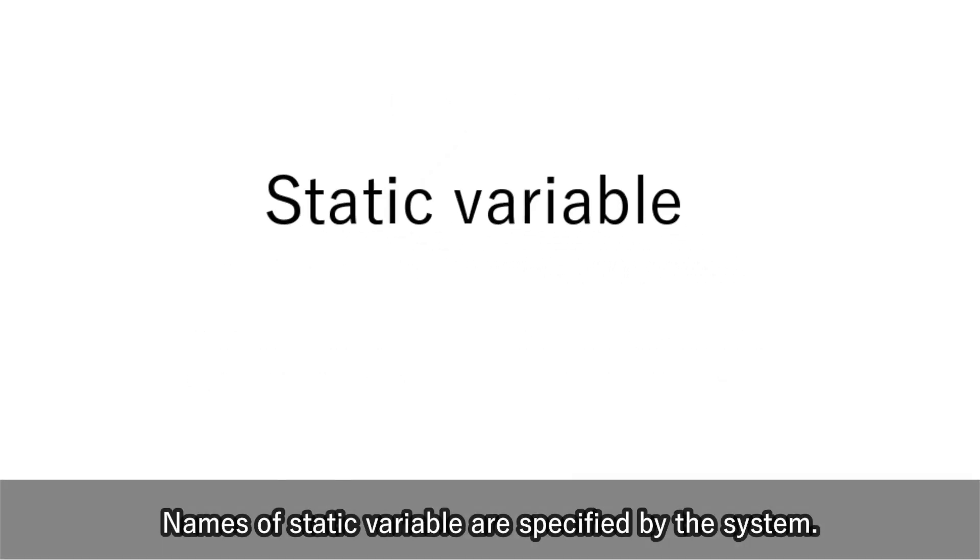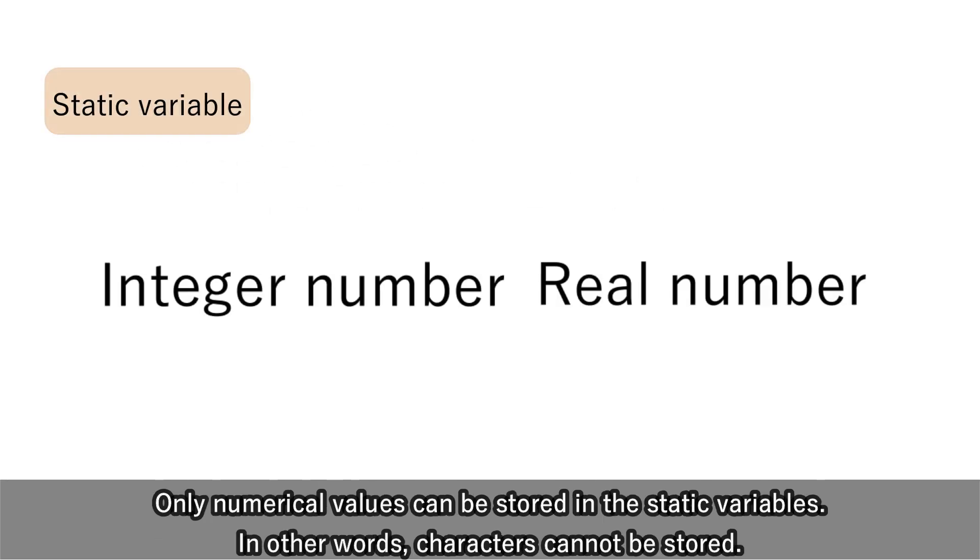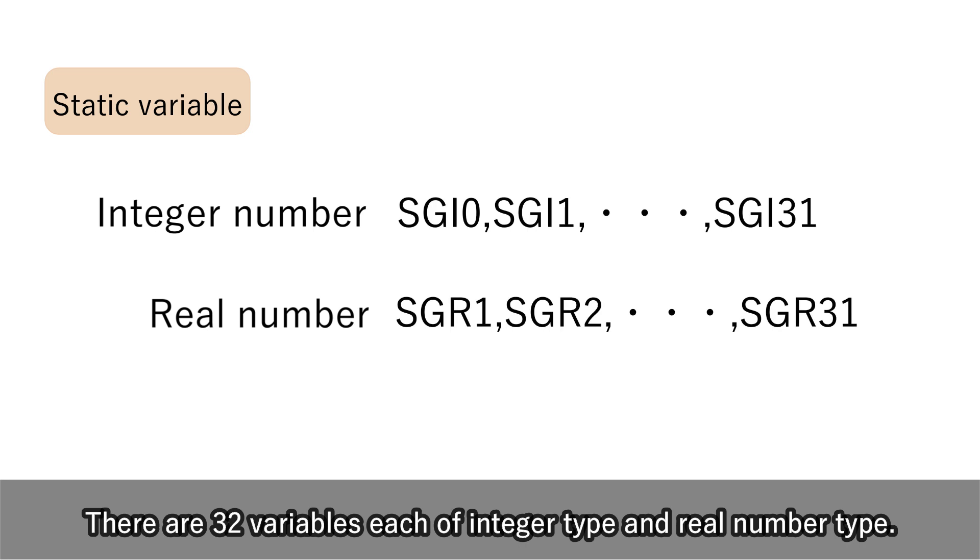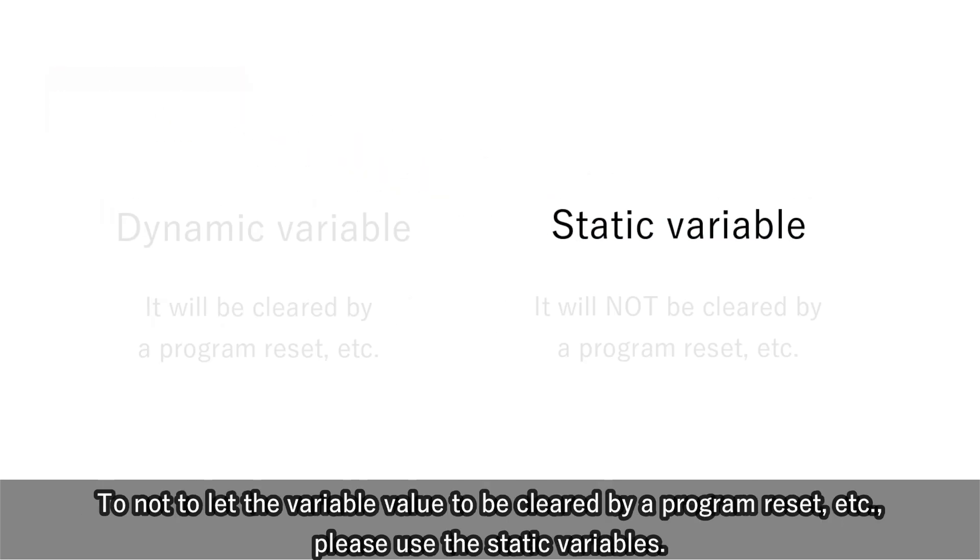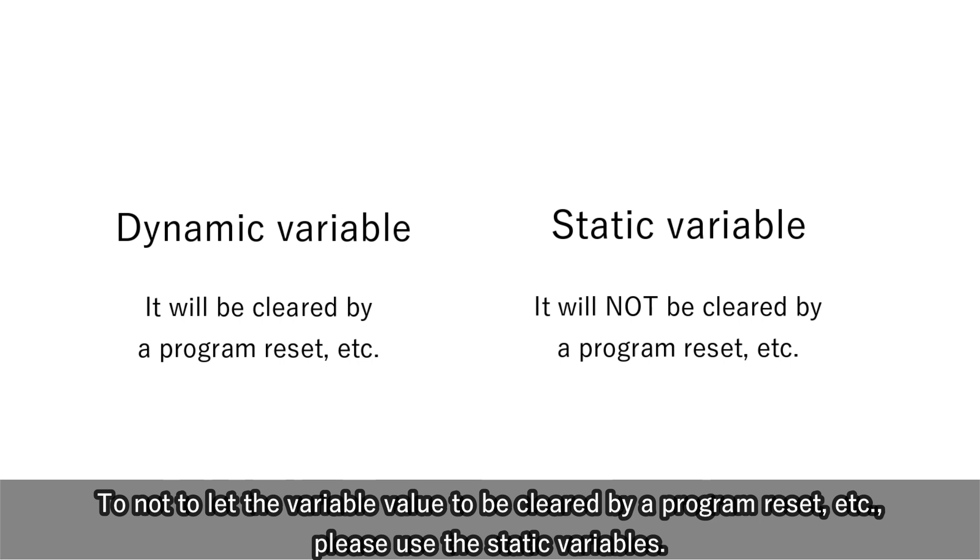Names of static variables are specified by the system. Only numerical values can be stored in the static variables; in other words, characters cannot be stored. There are 32 variables each of integer type and real number type. To not to let the variable value to be cleared by a program reset, etc., please use the static variables.